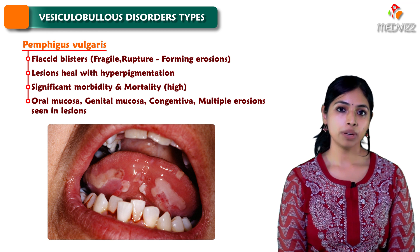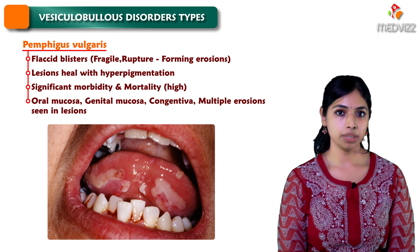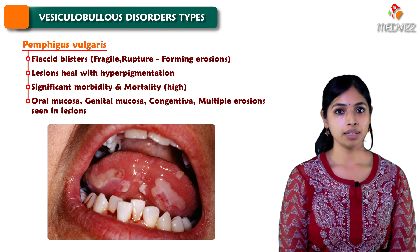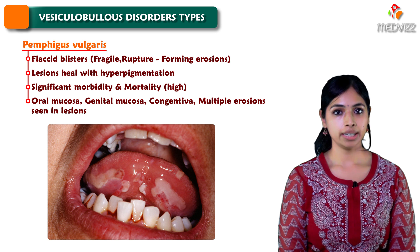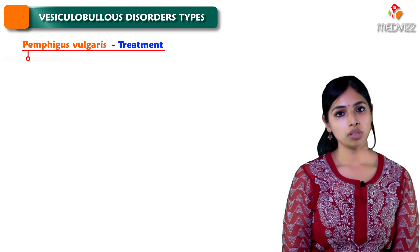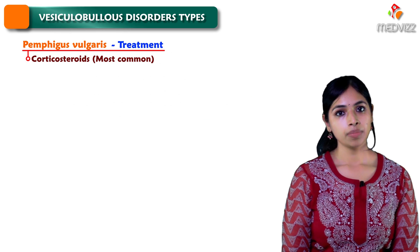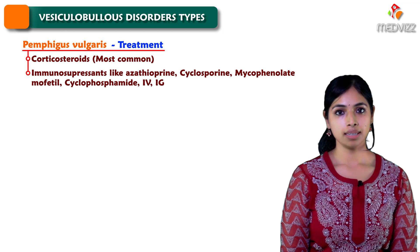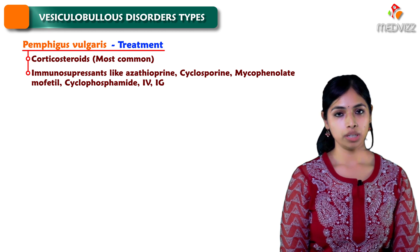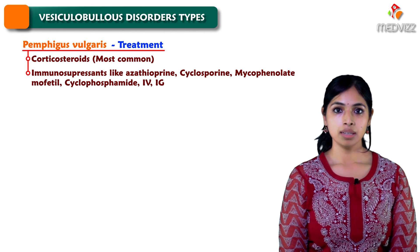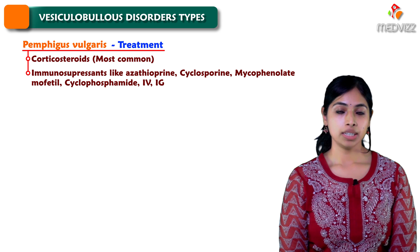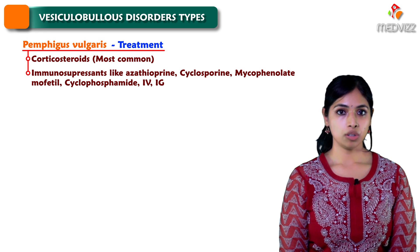Even though this condition is quite severe, we need not worry because it is quite treatable. There are various medications we can use. Most commonly we give corticosteroids, after which we consider other immunosuppressants such as azathioprine, cyclosporine, mycophenolate mofetil, cyclophosphamide, IVIG, and various biologicals.